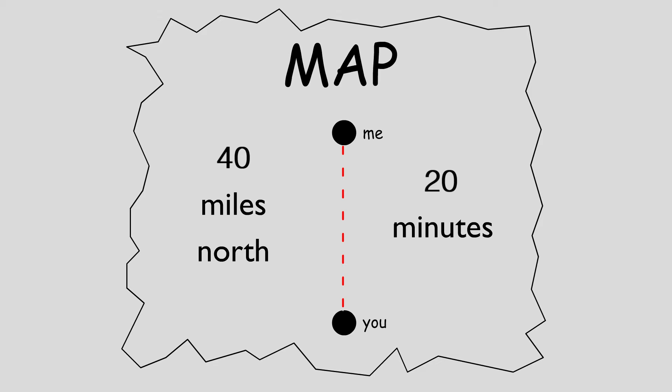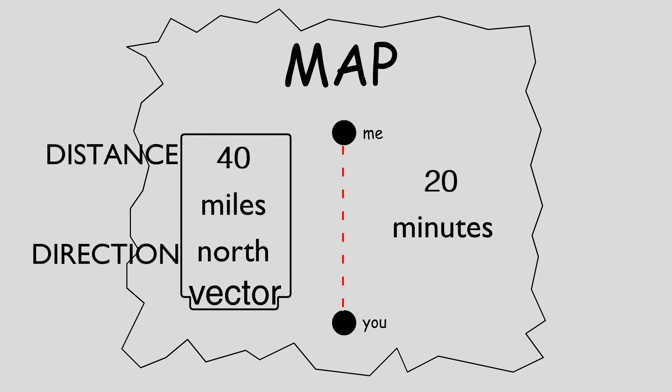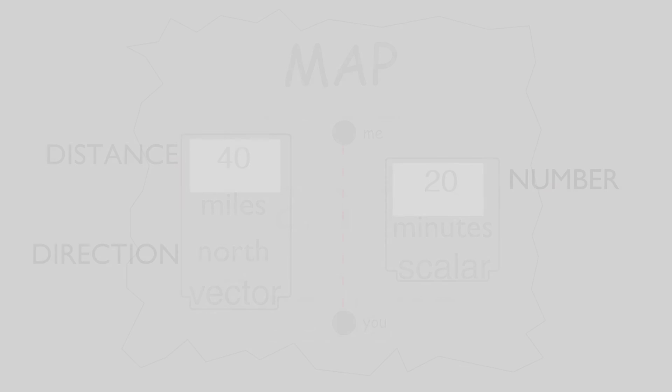Without realizing it, you actually use two very fundamentally different kinds of quantities while giving those directions. When you told him where to go, you gave him a distance and a direction to go, whereas when you told him how long it would take to get there, you only gave him a number. These two types of quantities, called vectors and scalars, have important distinctions and implications in physics that we should explore.